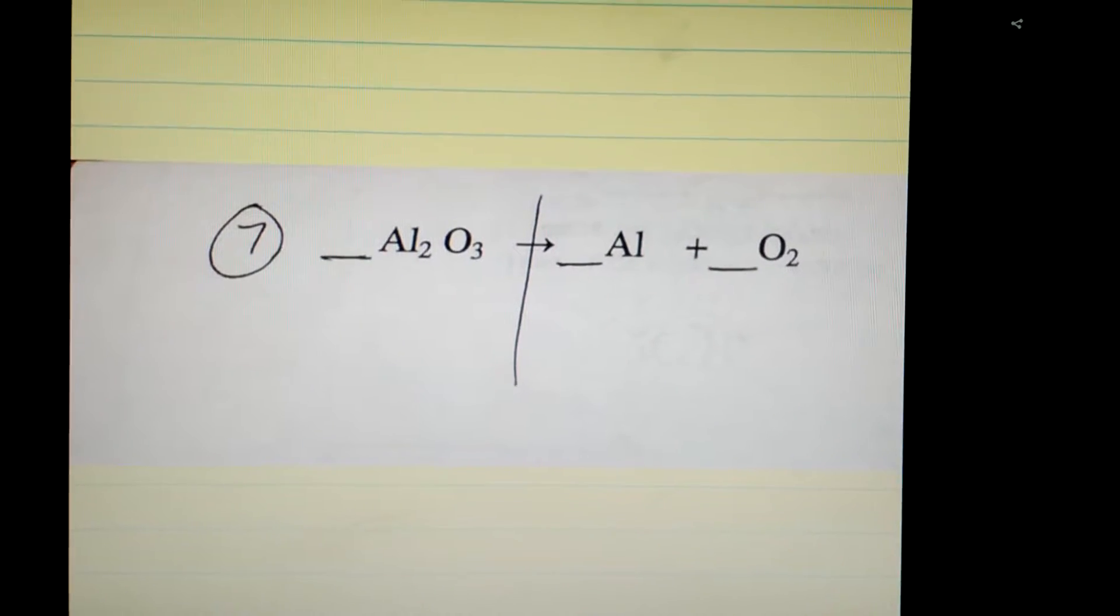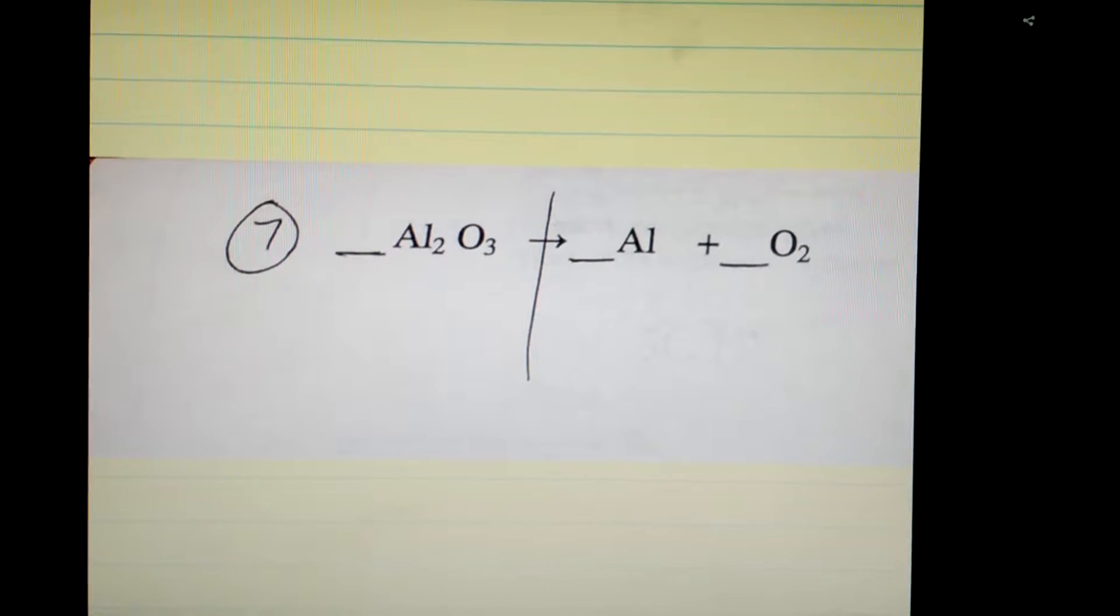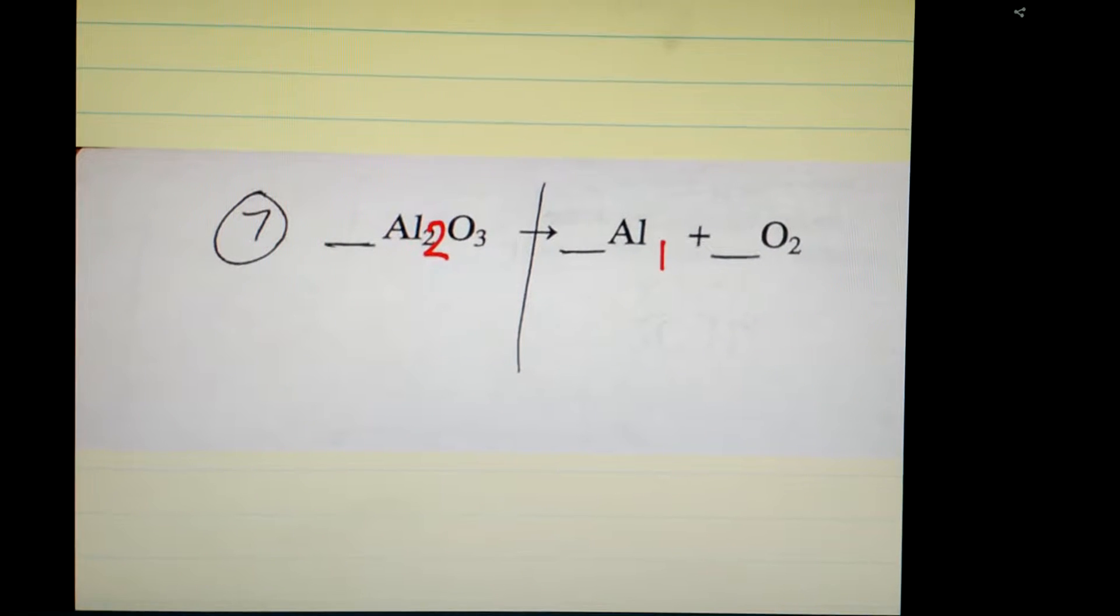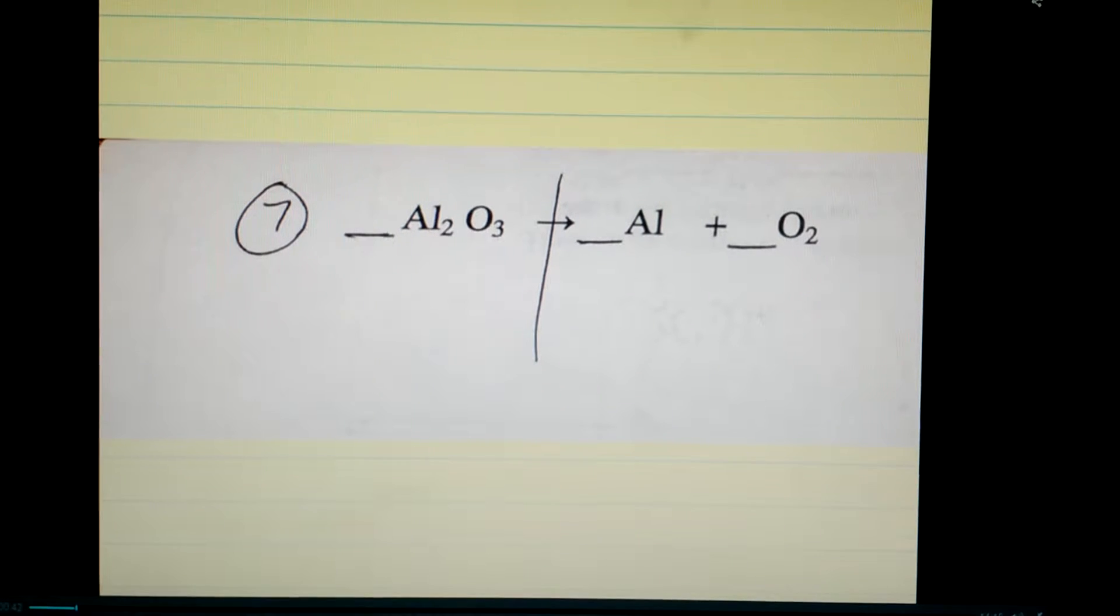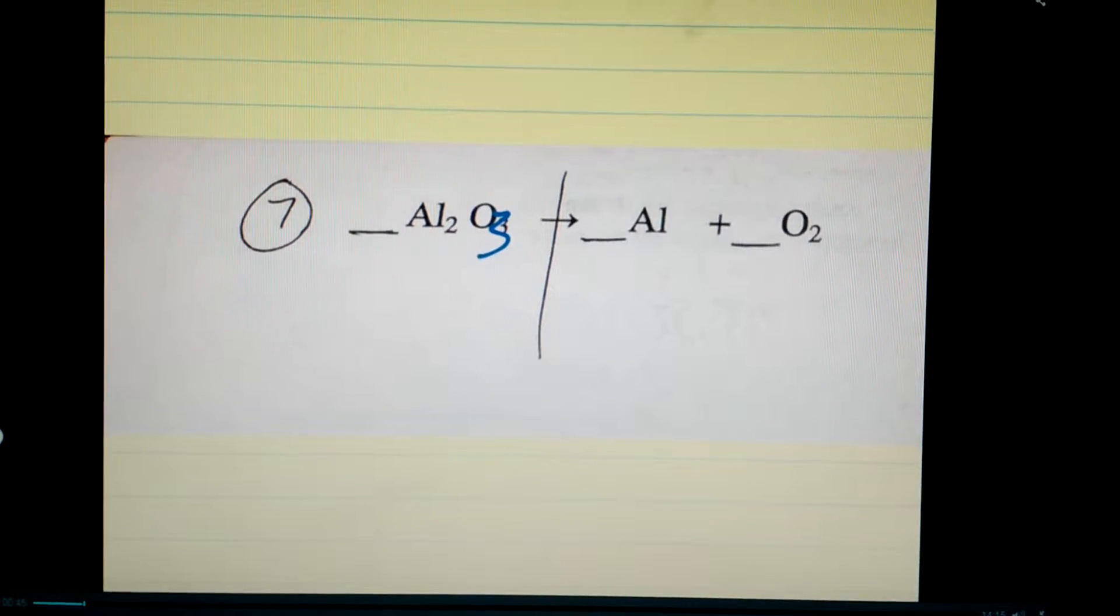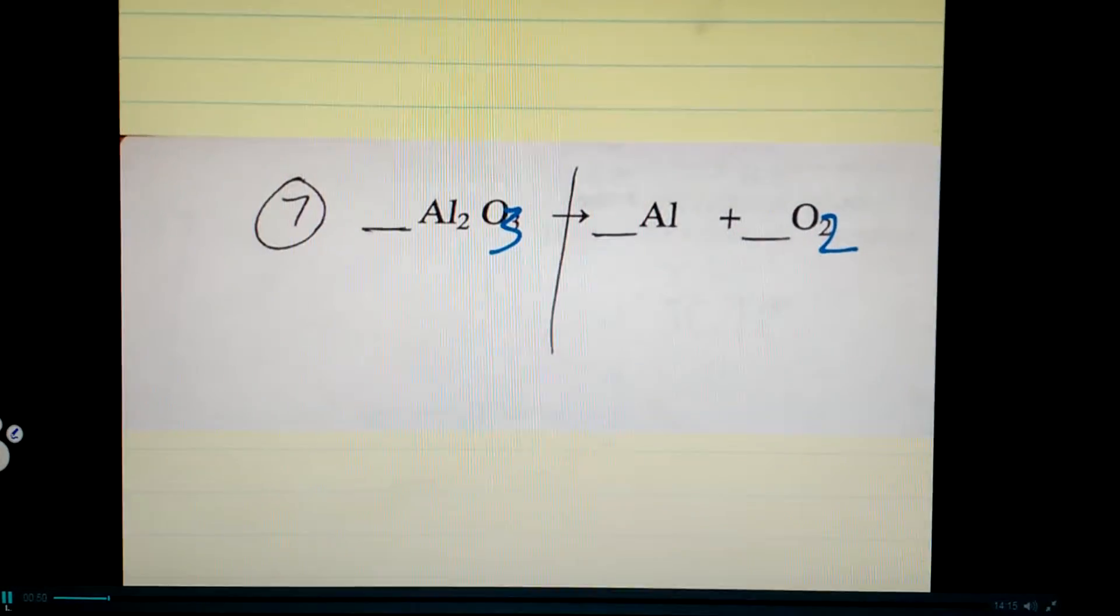The first thing that you will probably notice is that your aluminums are not the same amount. You have two aluminums on the left and only one on the right. So it's not the same. Also you have three oxygens on the reactant side and only two oxygens on the product side. Not the same.